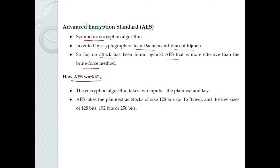How does AES work? AES takes two inputs in the encryption algorithm. The first one is the plaintext and the second one is the key. The plaintext is the original message. Since AES is a symmetric encryption algorithm, the same key is used on both the sender side and the receiver side.